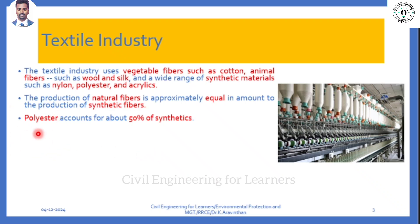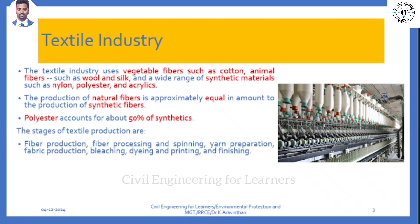Polyester is completely a synthetic material - polyesters account for 50% of synthetics. In Bangalore, purely cotton material is not commonly used; if you purchase purely cotton material, it will shrink easily. What are the stages of textile industries where waste is generated? This is our primary focus.